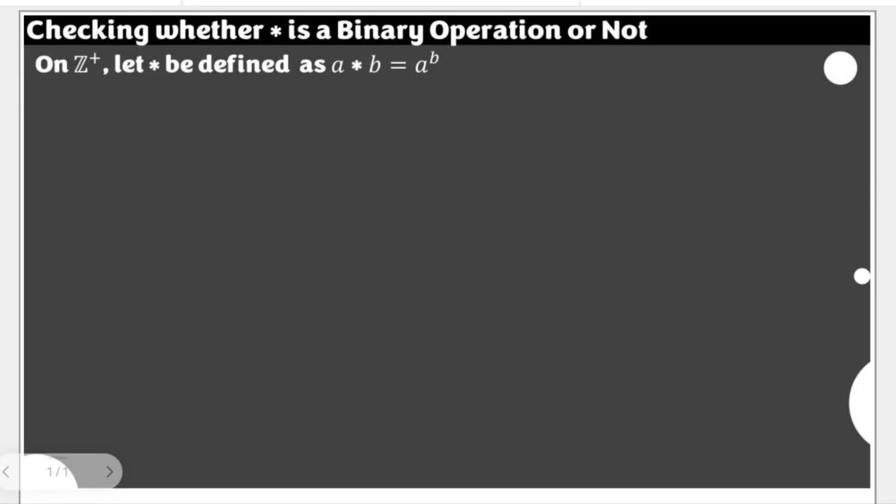To determine whether the operation star is a binary operation or not, we simply need to look at the closure property. If we pick elements on the given set, and the resulting value using the binary operation or the operation indicated will still fall into the same set, then we could say that the operation is a binary operation.